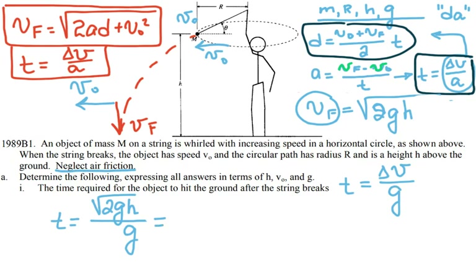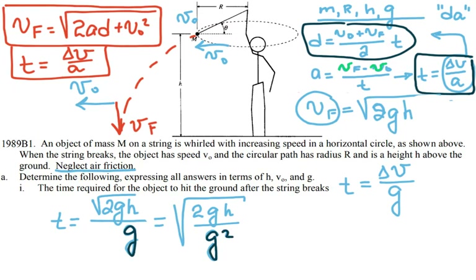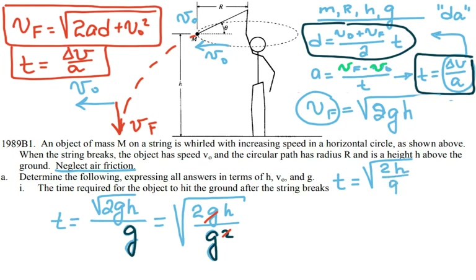Simplifying the expression: t = √(2gh)/g. I can write this as √(2gh/g²), and since √(g²) = g, one of the g's cancels. The final expression for the time is t = √(2h/g).